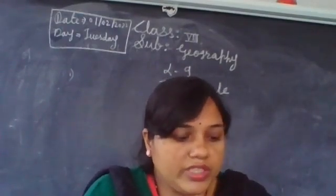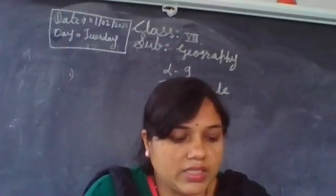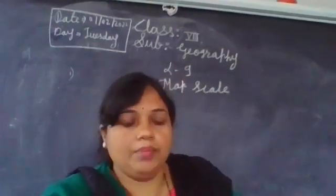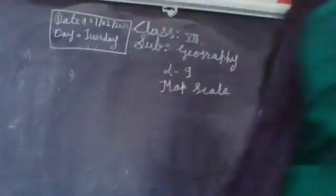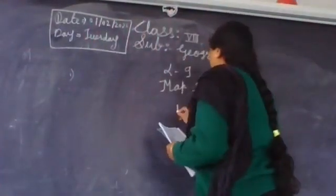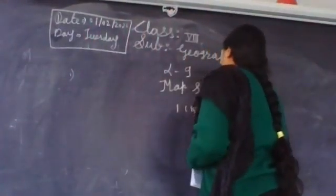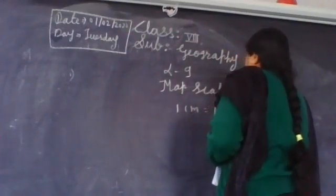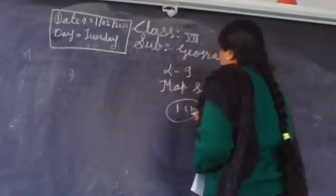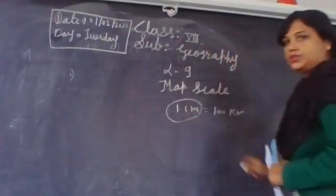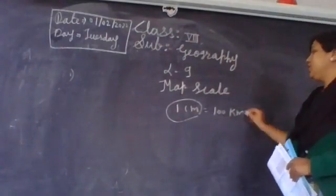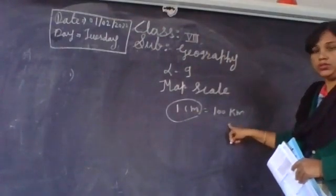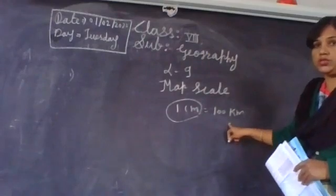A scale in which distances are expressed with the use of words. For example, one centimeter is equal to one kilometer. That means this is the distance on the map, and this is the actual distance on the ground.